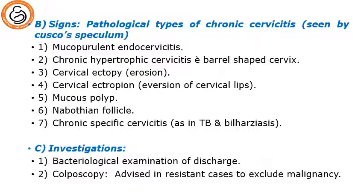The signs or pathological types of chronic cervicitis, which can be seen by casco speculum — and this is a common exam question — include: mucopurulent endocervicitis, chronic hypertrophic cervicitis with barrel-shaped cervix, cervical ectopy (which is cervical erosion), cervical ectropion with eversion of the cervical lip, mucous polyp, Nabothian follicle, and chronic specific cervicitis, which is very rare.